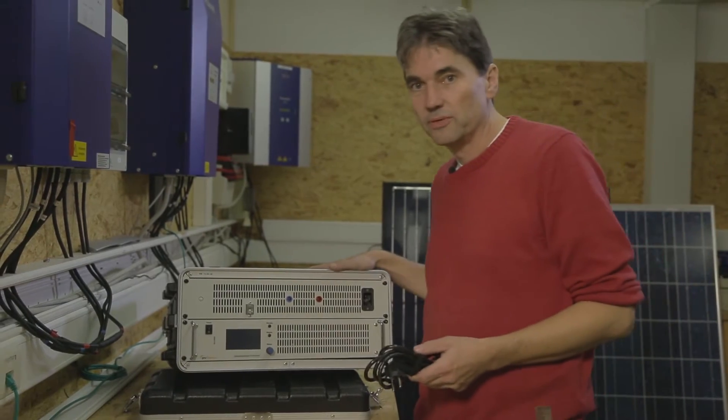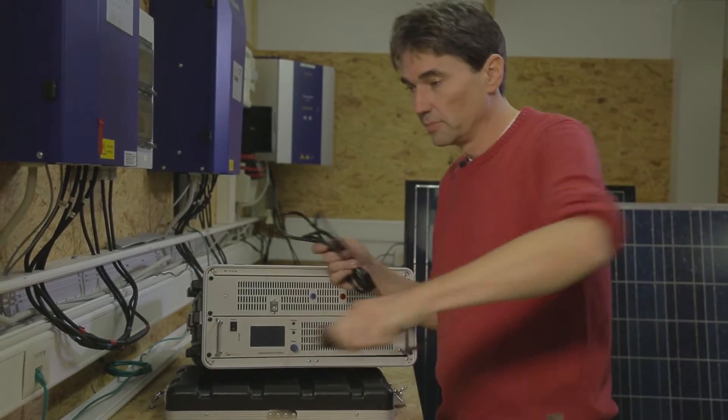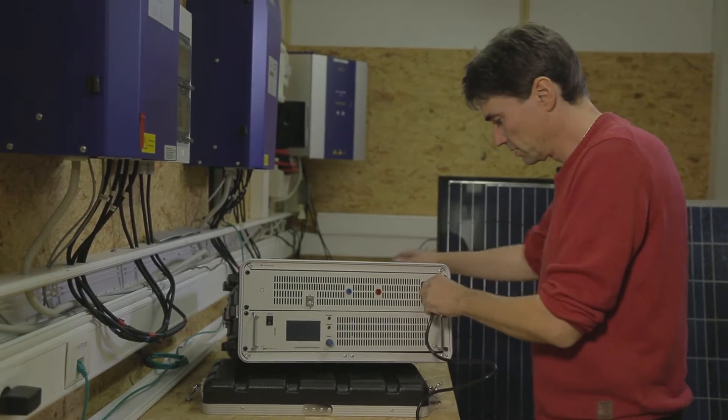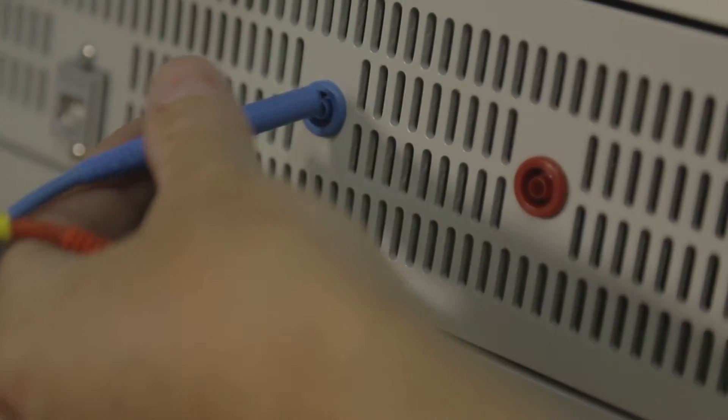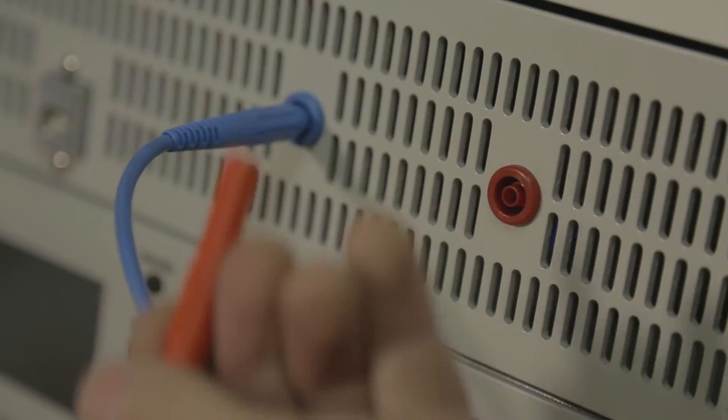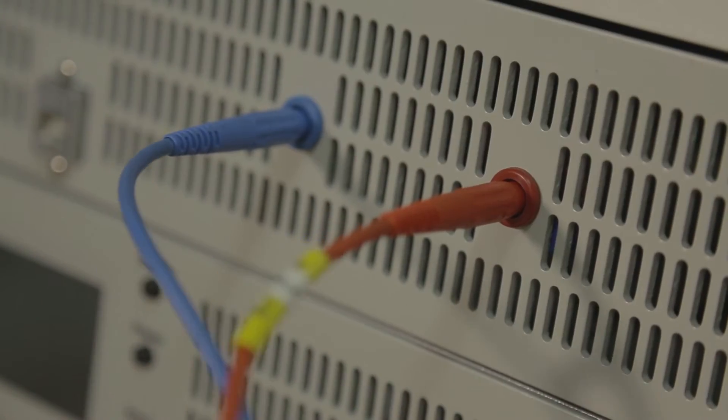Let me briefly show you how PVServe works. First, you have to connect the voltage supply using the mains plug. The two laboratory plugs are on the front. Make sure that the red plug, for positive, is inserted into the red socket. The blue one, for negative, goes into the blue socket.